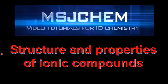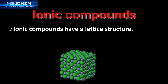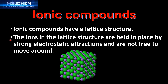This is MSJChem and in this video I'm going to look at structure and properties of ionic compounds. Let's start by looking at the structure of ionic compounds. Ionic compounds have a lattice structure. The ions in the lattice structure are held in place by strong electrostatic attractions, which come from the oppositely charged ions, and are not free to move around.